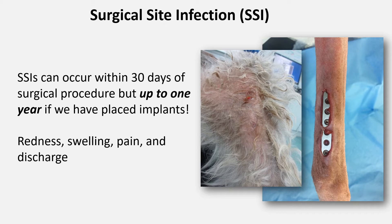Surgical site infections — we discussed these when talking about the importance of asepsis, but we'll cover the major points again because it is so important to minimise the risk of an SSI. SSIs are defined as occurring up to 30 days of a surgical procedure, but up to a year if we placed implants. Classical symptoms are redness, swelling, pain and a discharge. The discharge does not have to be purulent to indicate infection — it may appear as a simple serous discharge. The image on the left is a discharging sinus arising from implant-associated infection in the proximal tibia of a dog, and the image on the right is every orthopaedic surgeon's nightmare.